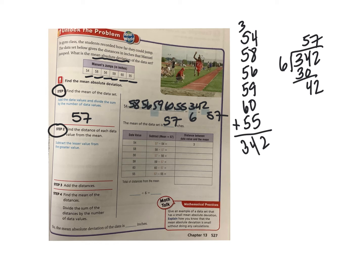Step two is to find how far each piece of data deviates from the mean of 57. So: 57 minus 54 is 3; 58 minus 57 is 1 — notice they swapped that around because we're using absolute value, just a distance away, it doesn't matter which direction. 57 minus 56 is 1; 59 minus 57 is 2; 60 minus 57 is 3; and 57 minus 55 is 2. They're usually fairly close to the mean.